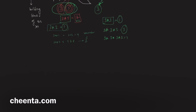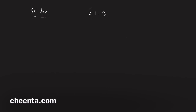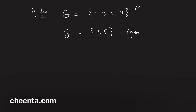Let's quickly review what we have learned. We have the set G = {1, 3, 5, 7}, and we have a set S = {3, 5} which is a subset of G. This set S is known as the set of generators of G, because using the star operation and these two elements we can create all elements of G.